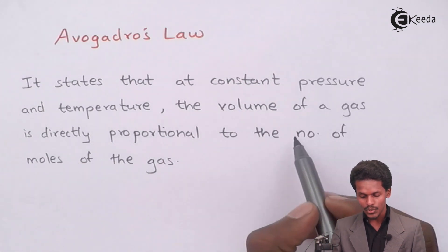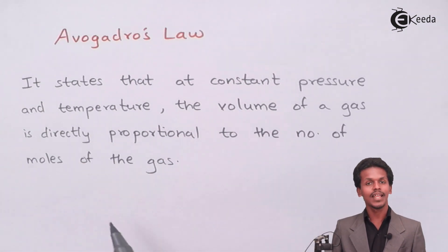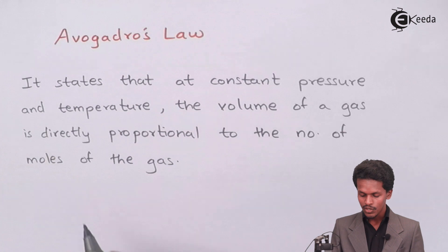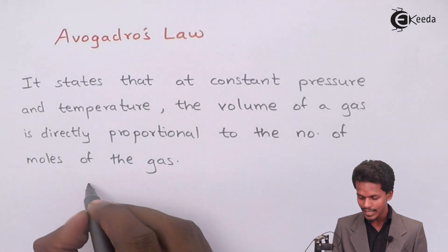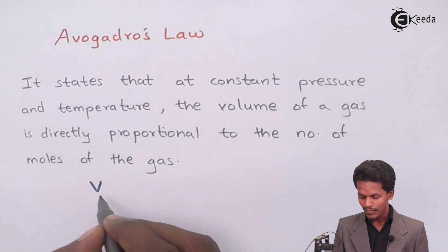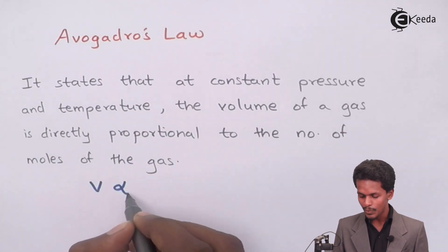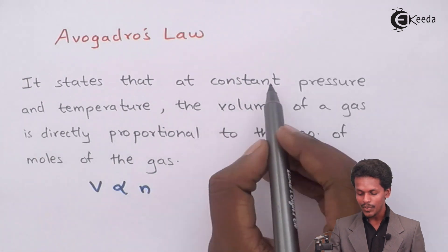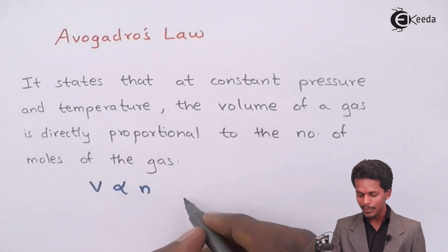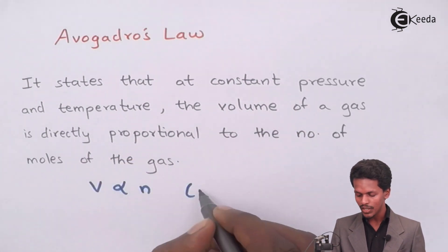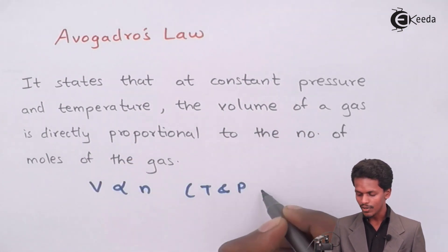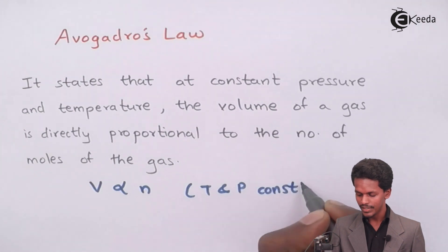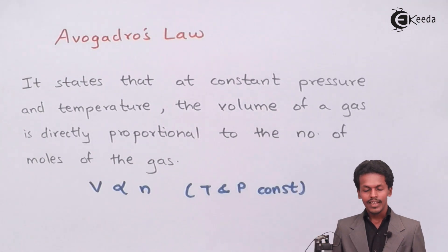As it says, the volume of the gas is directly proportional to the number of moles, and the number of moles is represented by n. So we can clearly say that V is directly proportional to n, and in this case the temperature and pressure are both kept constant — T and P are constant.